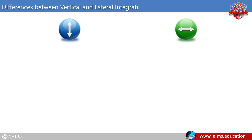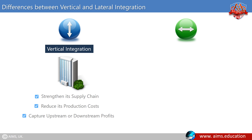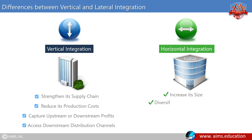When a company wishes to grow through vertical integration, it is seeking to strengthen its supply chain, reduce production costs, capture upstream or downstream profits, or access downstream distribution channels. However, when a company wishes to grow through horizontal integration, it is seeking to increase its size, diversify its product or service, achieve economies of scale, reduce competition, or gain access to new customers of the same market.